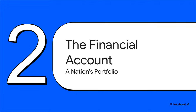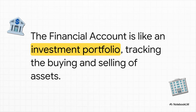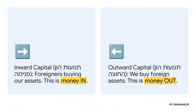Now let's look at the second major part of the report: the financial account. This is where we get into the big, long-term investments. If the current account was like our country's monthly budget, the financial account is like our national investment portfolio. This is where we track all the buying and selling of financial assets — stocks, bonds, factories, real estate, the whole shebang. When a foreign investor buys property or stocks in our country, money flows in — that's an inward capital movement and it's a credit. When one of our citizens buys stock in a foreign company, money flows out — that's an outward capital movement, and it's a debit.